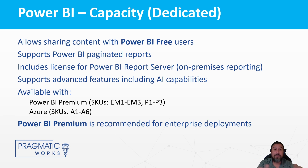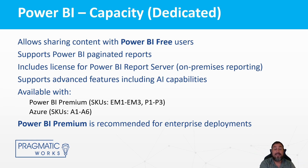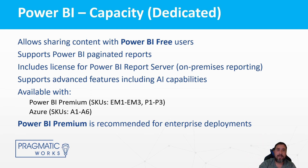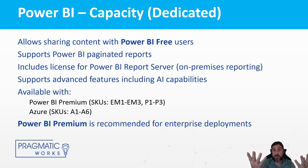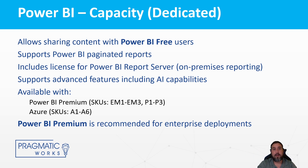When you purchase Premium — and once again, Premium is one version of dedicated capacity — there are P SKUs for Premium, A SKUs for Azure Embedded, and a bunch of different options. Along with it, you also get a license for Power BI Report Server and some additional AI capabilities. In Power BI Desktop there's AI Insights — sentiment analysis, image recognition, and ML models. Those require dedicated capacity and a report that must be stored in a dedicated capacity workspace.